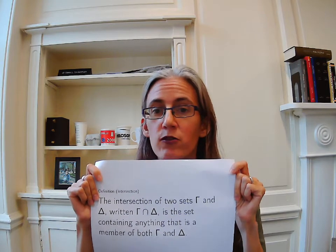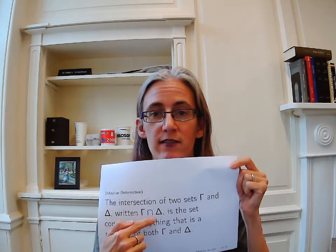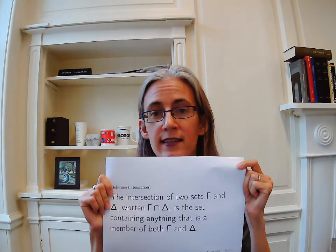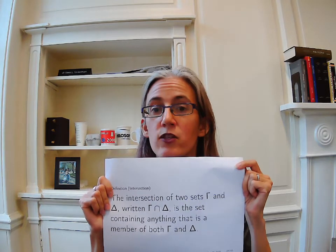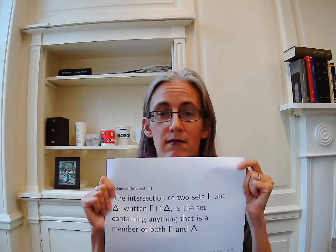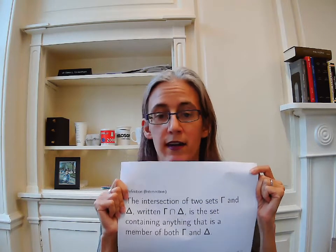Anyway, back to intersection. The intersection of two sets, gamma and delta, written gamma intersection delta, is the set that contains anything that is both a member of gamma and a member of delta.